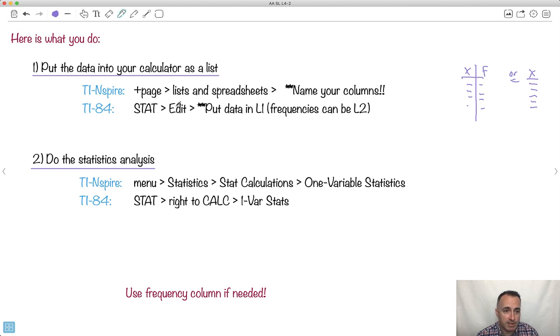If it's on the 84, you press stats, you go to edit, and you put it in as L1, frequencies would be L2. So in other words, this right here would be L1, you'd have a big list, and maybe even L2, so you'd have your numbers like this, if you need L2.